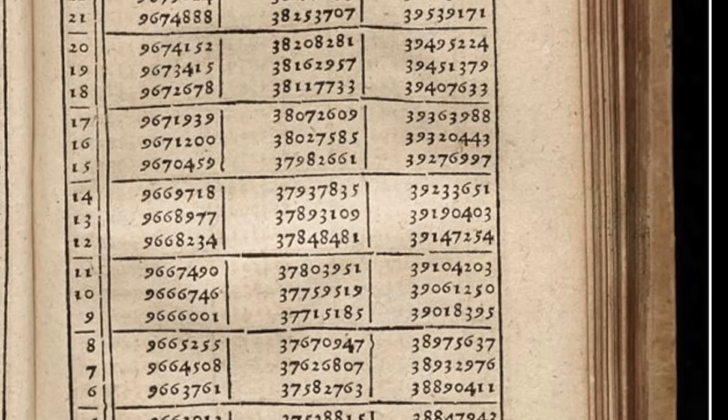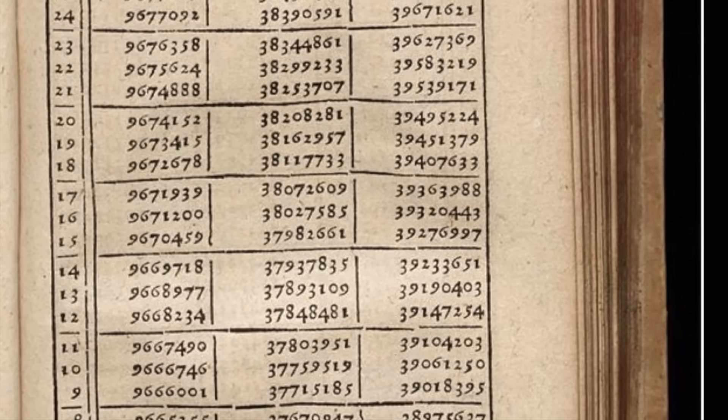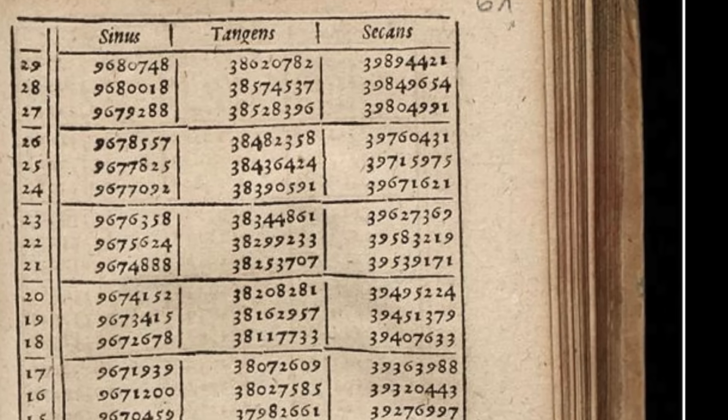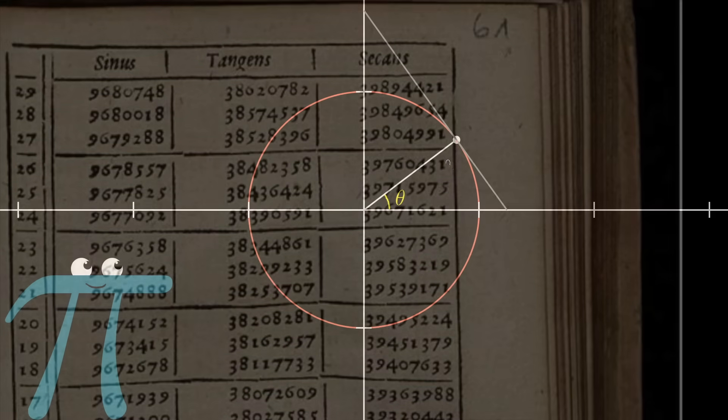And when you can't easily plug in something like 1 divided by the sine of 30 degrees into a calculator, it might actually make sense to have a dedicated column to this value with a dedicated name.